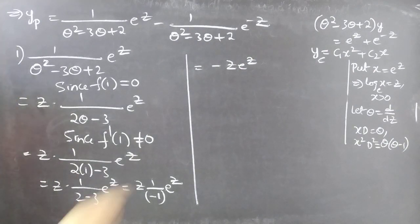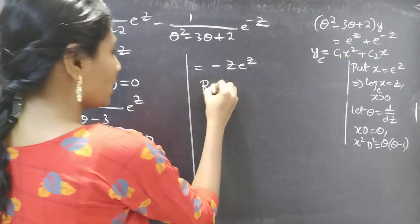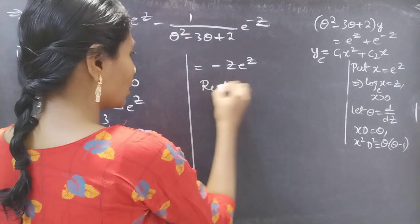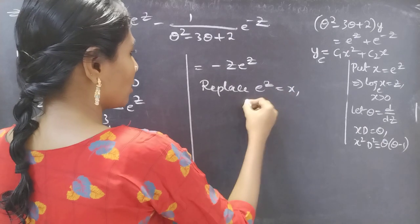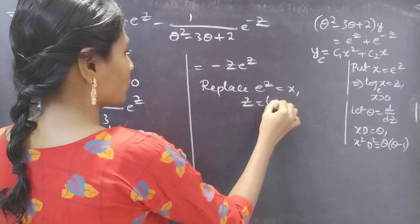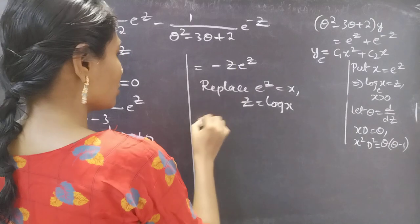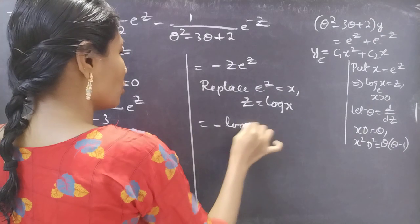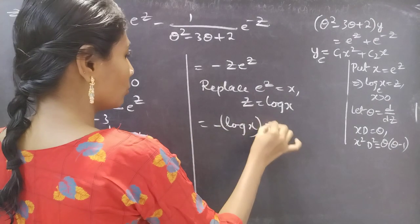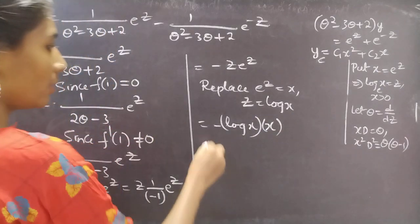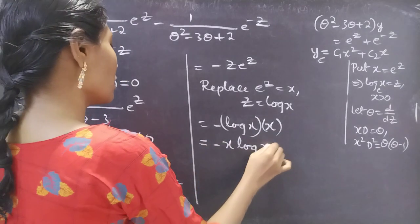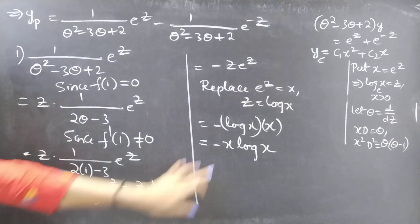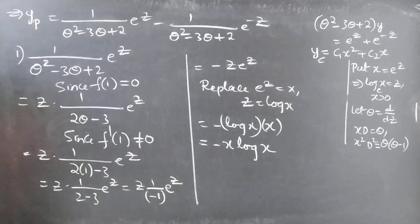Now we have the first term in terms of z and we need to write it in terms of x. Replacing e to the power z by x and z by log x, we get minus log x times x, which we write as minus x log x. This is the result obtained from the first term.